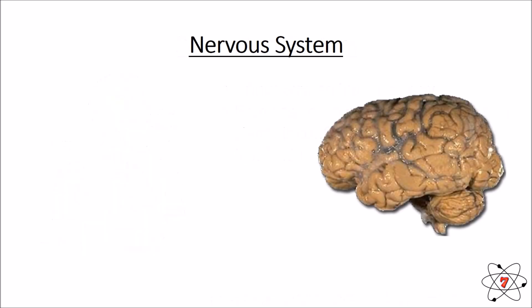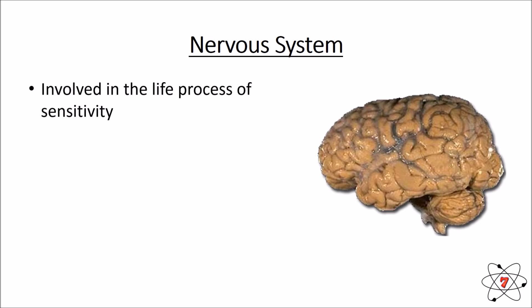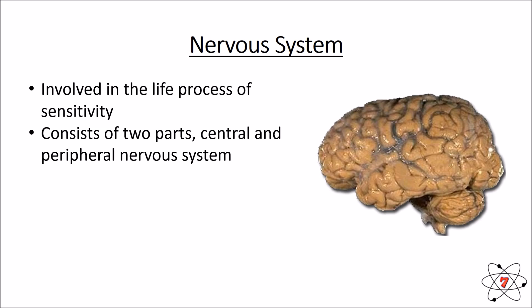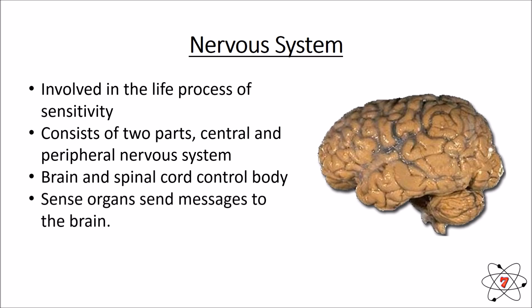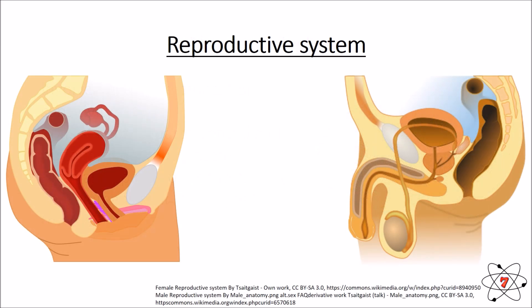Our nervous system is involved in the life process of sensitivity. It has two main parts: the central nervous system and the peripheral nervous system. The brain and spinal cord control our central nervous system and send signals through our neurons — our specialized cells. Our nervous system is made up of many sense organs: eyes, ears, mouth, nose, tongue, and skin — all of these detect stimuli.